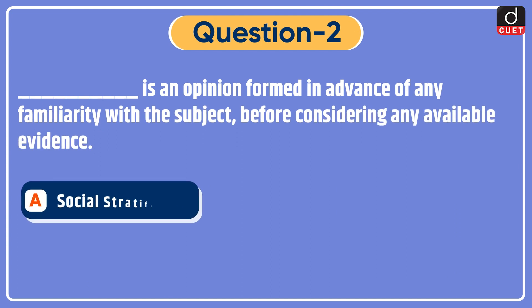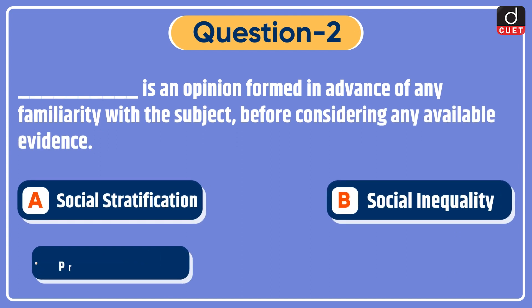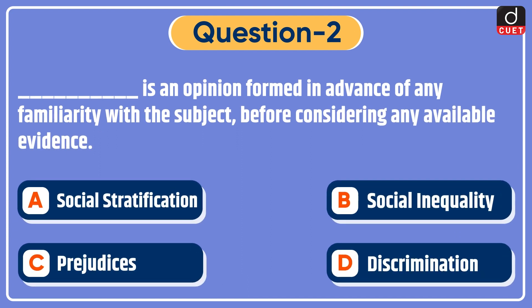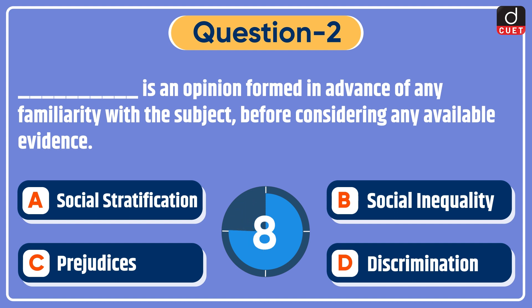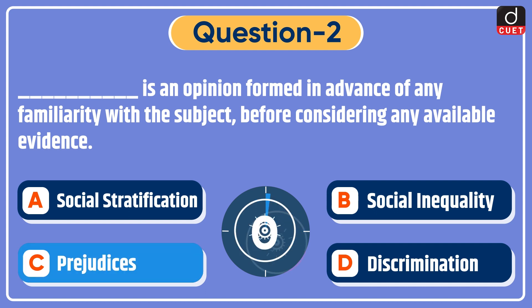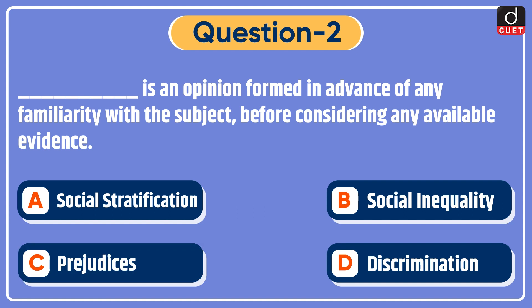Next question: blank is an opinion formed in advance of any familiarity with the subject, before considering any available evidence. Options: social stratification, social inequality, prejudice, or discrimination? The correct answer is option C — prejudice.